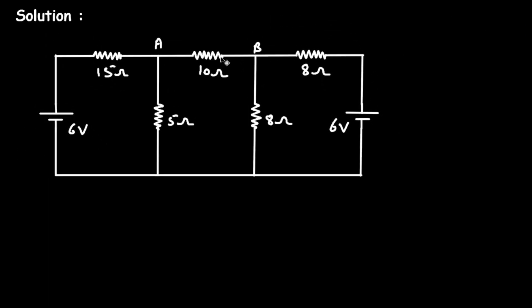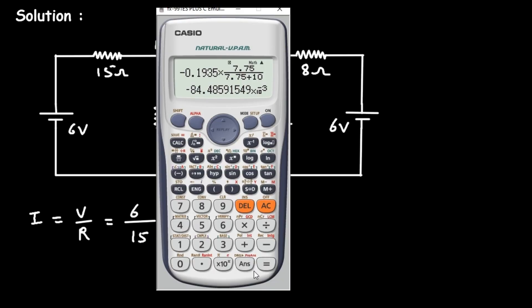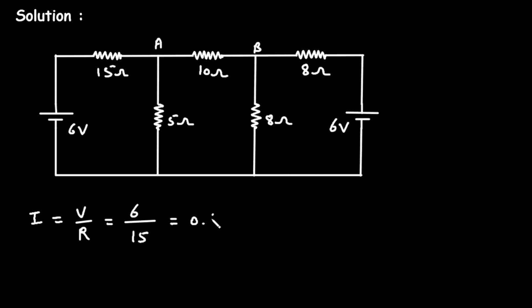Solution: first of all we will take this circuit. We can convert this 6V voltage source and this 6V voltage source into their equivalent current sources. Let's convert the first 6V voltage source: I is equal to V upon R. Here the voltage is 6V and the series resistance is 15 ohm, so 6 divided by 15 equals 0.4 ampere.